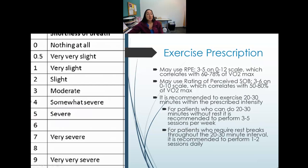The RPE scale can also guide exercise intensity. On a 0-to-12 scale, patients should aim for a 3 to 5, correlating to about 60 to 78 percent of VO2 max. On a perceived shortness-of-breath scale, a rating of 3 to 6 — moderately short of breath — correlates to approximately 50 to 80 percent of VO2 max.